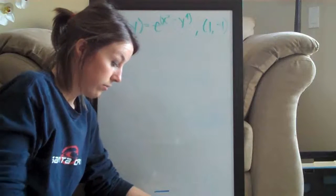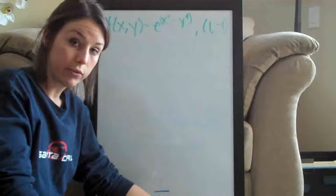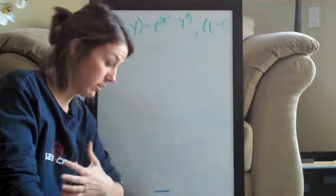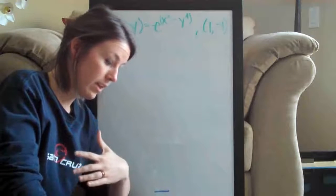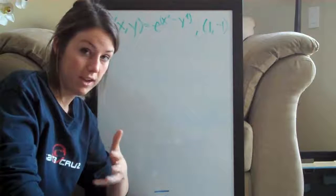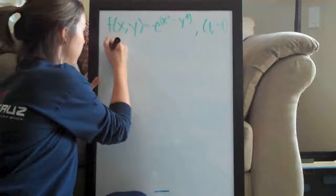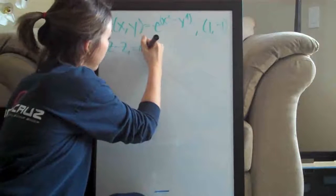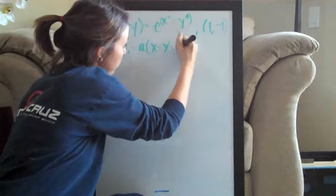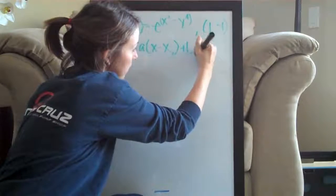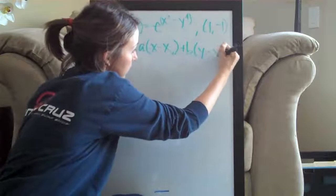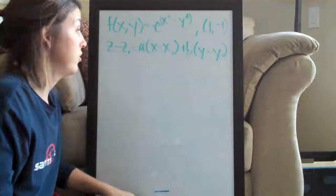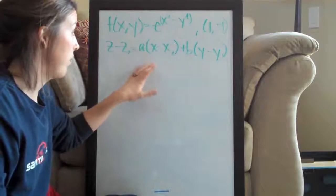The formula I always like to use for linear approximation problems is one that I think is much simpler than the one often given in calculus textbooks. It's the same thing, it just looks less terrifying: z minus z1 equals a times x minus x1 plus b times y minus y1. This is the equation I always use for linear approximation problems.